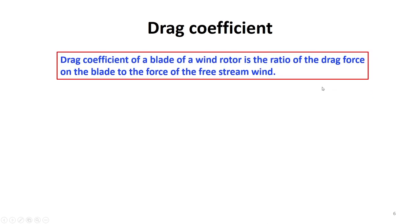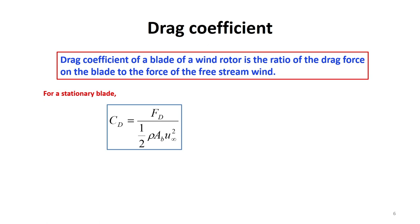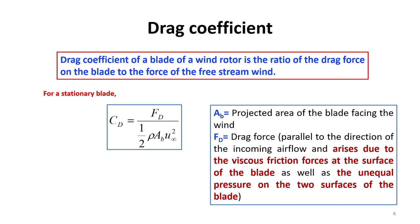Drag coefficient of a blade of a wind rotor is the ratio of the drag force on the blade to the force of the free stream wind. For a stationary blade, drag coefficient Cd is equal to Fd divided by half rho AB u-infinity squared, where Fd is drag force and this is parallel to the direction of the incoming air flow. This drag force arises due to viscous friction forces at the surface of the blade as well as the unequal pressure on both sides of the blade. AB is the projected area of the blade facing wind and rho is the density of air.